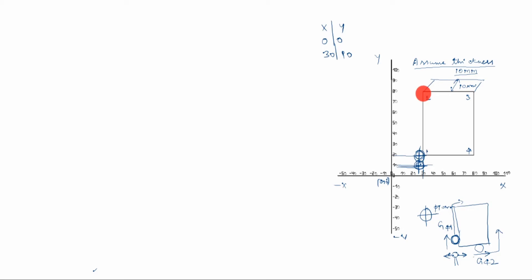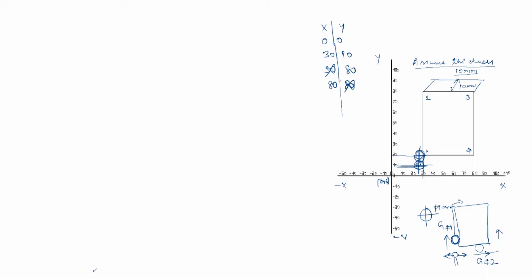Point 2: X-axis is 30, Y-axis is 80. Since we already wrote 30 for X, no need to write it again. Point 3: X-axis is 80, Y-axis is 80. Since we already wrote 80 for Y, no need to repeat it. Point 4: X-axis is 80, Y-axis is 20. Since 80 was already written for X, cancel it. Then it ends back at X 30, Y 20.